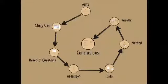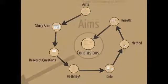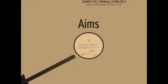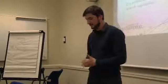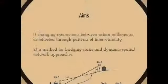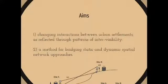I'll be talking about visibility patterns and analyzing intervisibility networks — specifically the changing interactions between urban settlements as reflected in patterns of intervisibility. Because it's a methodological talk and I want to contribute to an archaeologist's toolbox of quantitative techniques, I'll suggest a method that allows us to bridge static and dynamic spatial network approaches, through a case study on visibility networks.